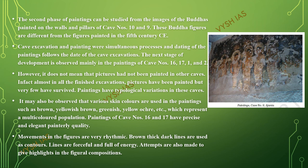The second phase of the paintings is studied from the images of the Buddha painted on the walls and pillars of Cave numbers 10 and 9. These Buddha figures are different from the painted Buddha figures of the 5th century CE. This is one of the paintings of Ajanta Cave number 9. The cave excavation and painting was a simultaneous process, and the dating of the paintings follows the date of the cave excavations. The next stage of development of the paintings is seen in caves 16, 17, 1, and 2.